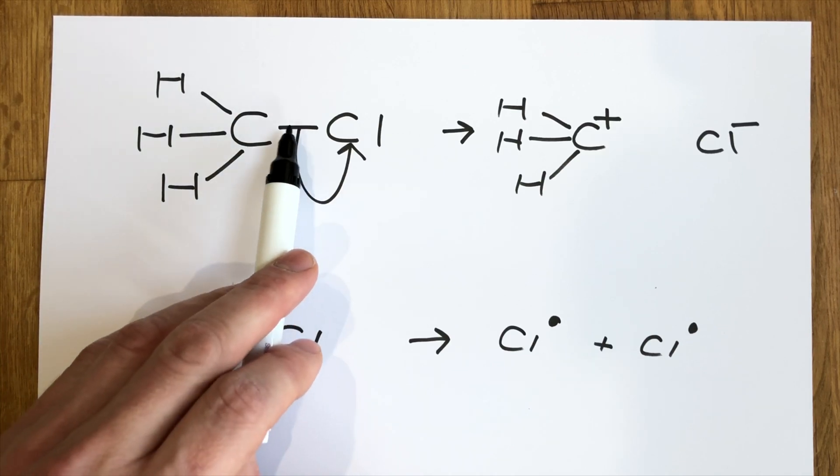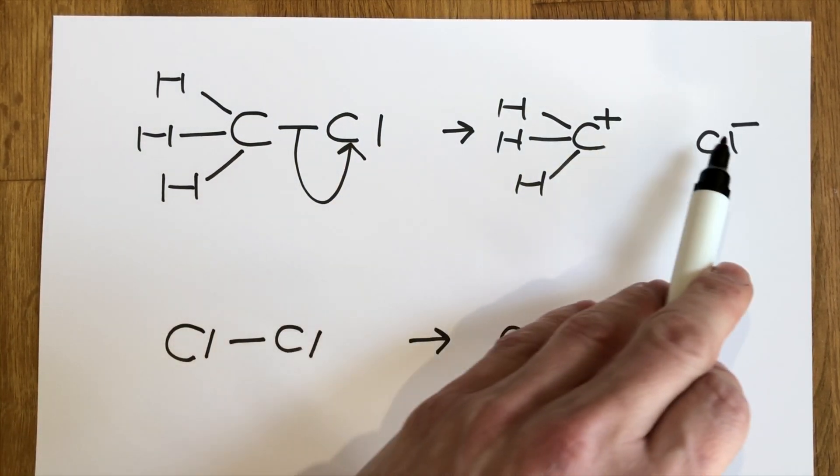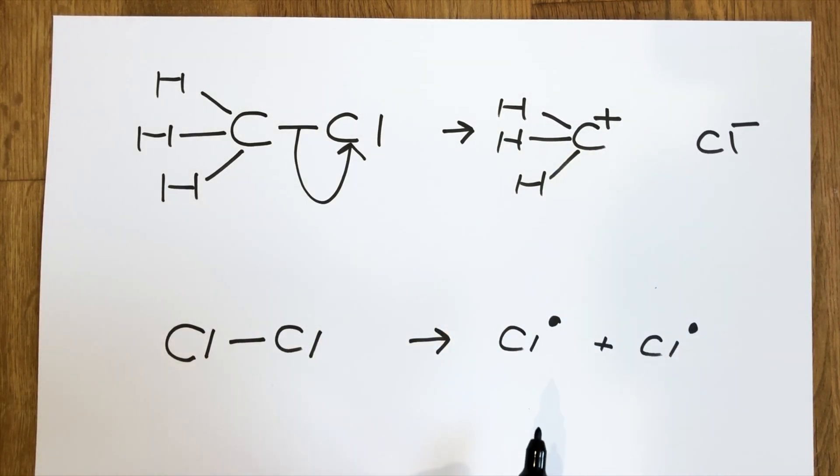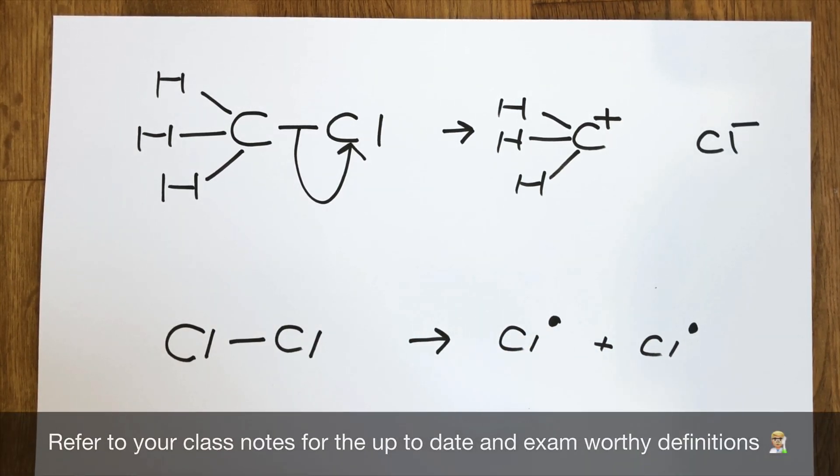Heterolytic bond fission is when the bond breaks and the electrons are shared unequally between the two atoms originally in the bond, creating two ions. Homolytic bond fission is when the bond breaks and the two electrons that were shared between the two atoms each go to one of the atoms from the original covalent bond. You need to be familiar with both types of these different bond fissions for your A-level in organic chemistry.